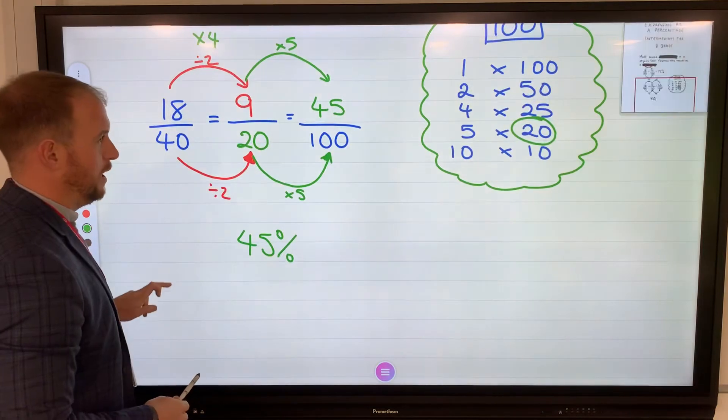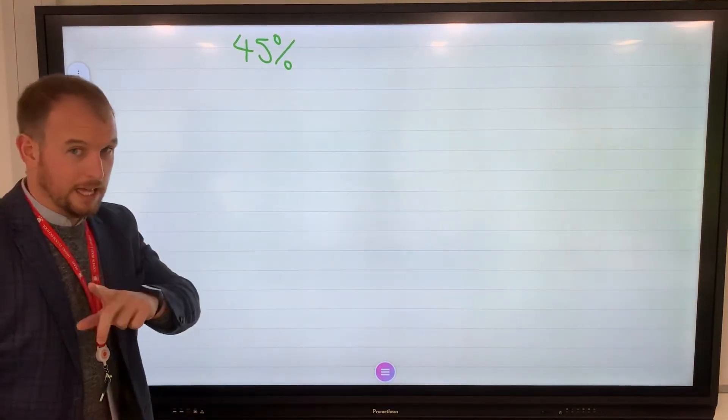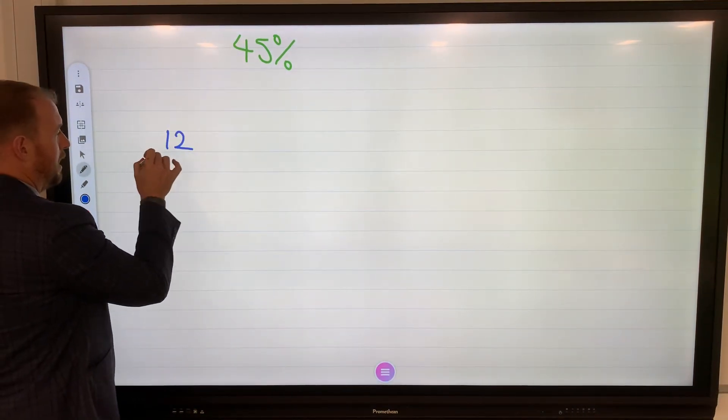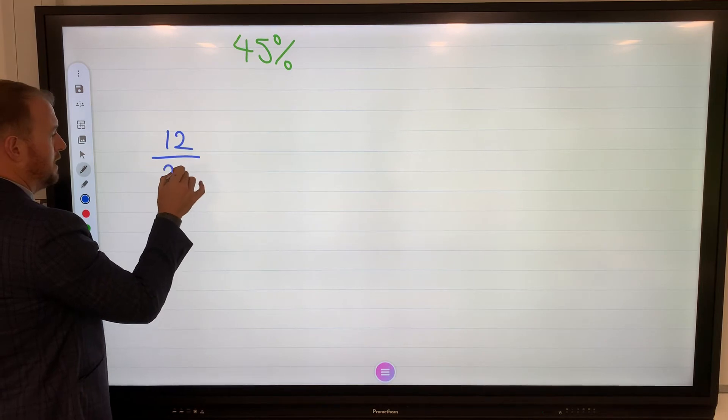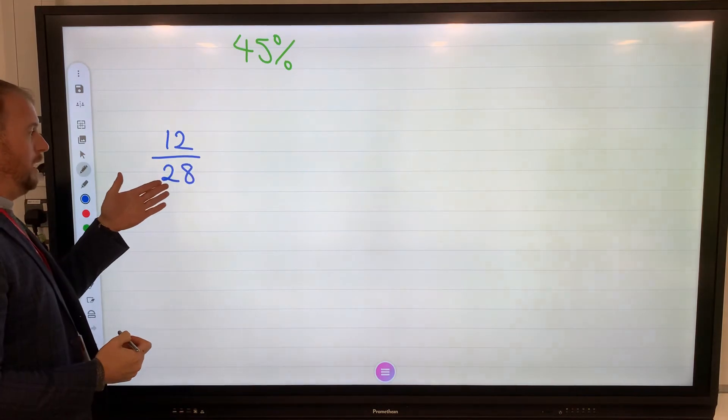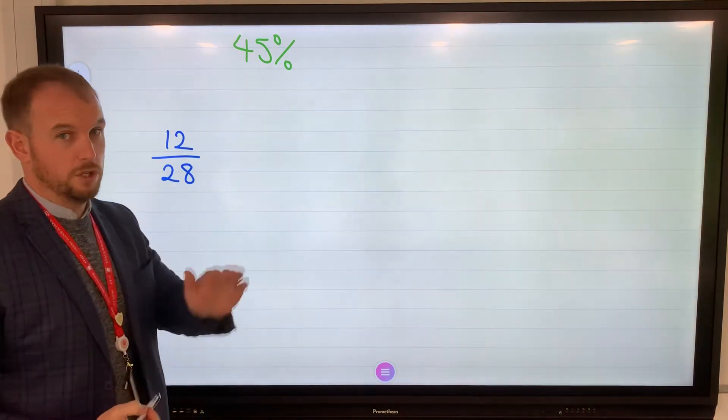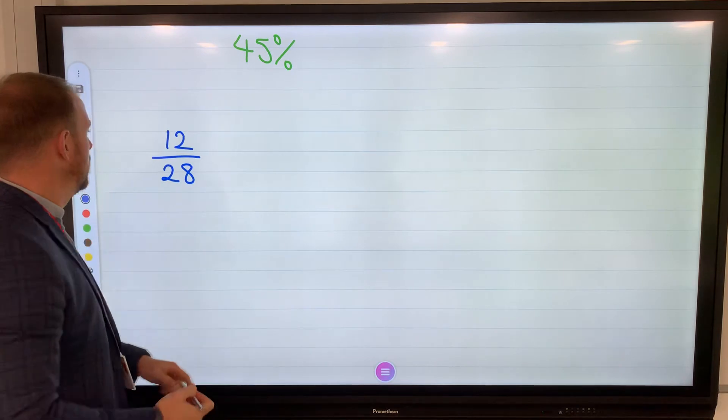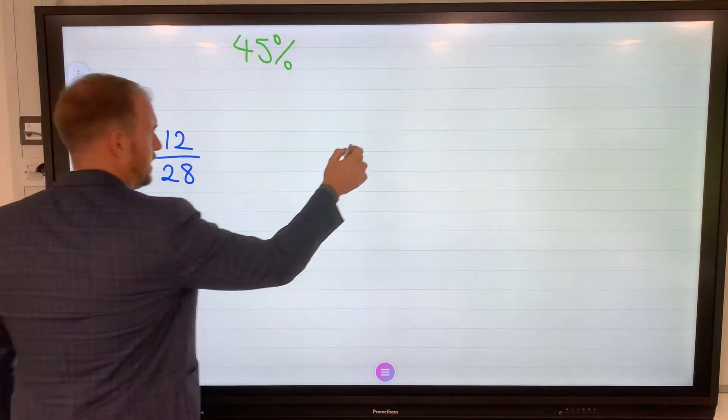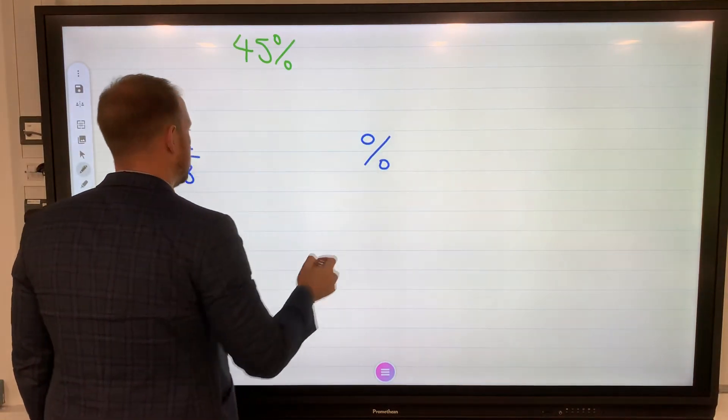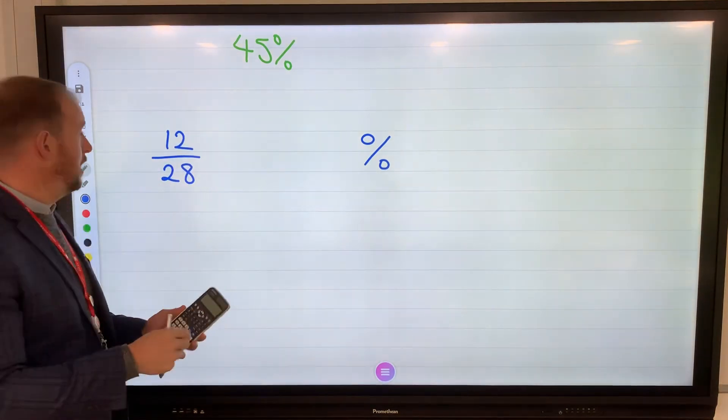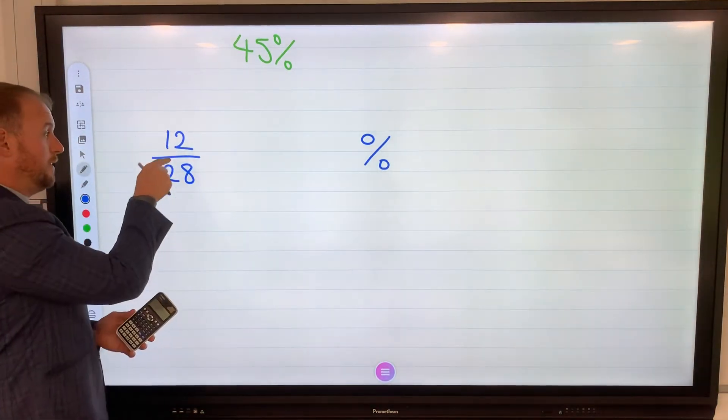You may get questions like this in a calculator paper, where you might have something like 12 out of, let's say, 28, for instance, whereas there's no easy way of getting from 28 to 100. But now we can use a calculator. So 12 out of 28, and now we need to make it into a percentage. All we do, in our calculators, we're going to convert this to a decimal. And the way we do that is we're going to do 12 divided by 28.